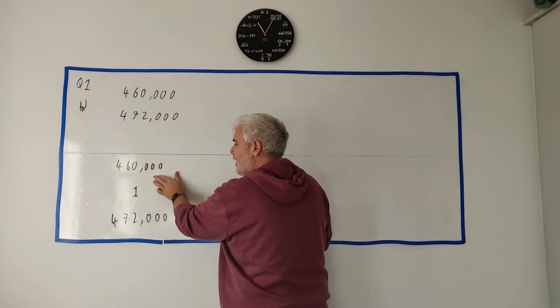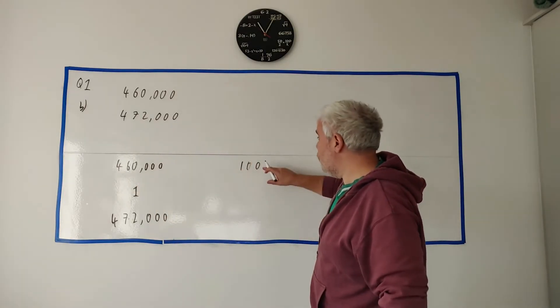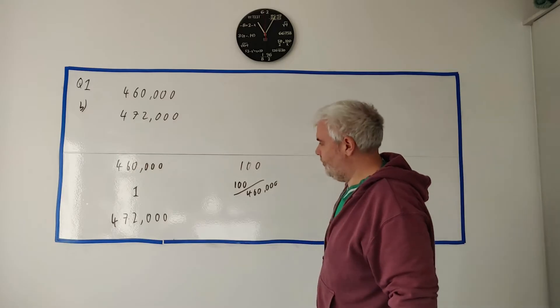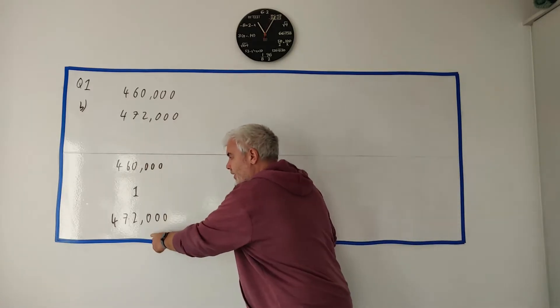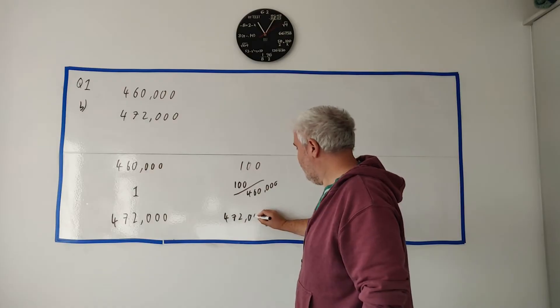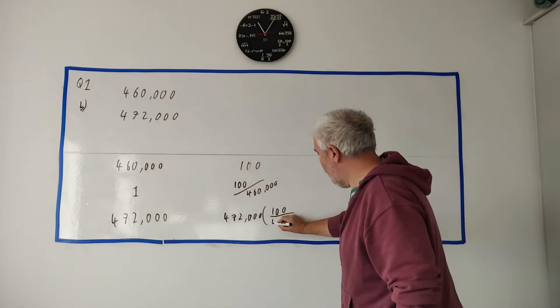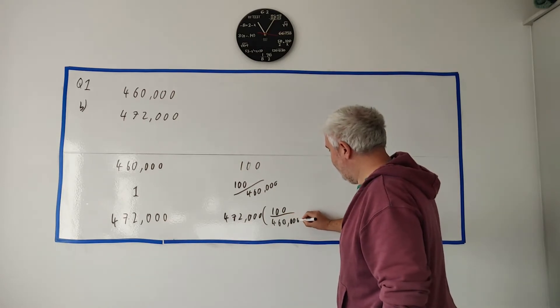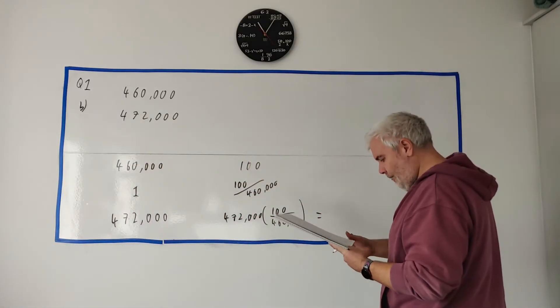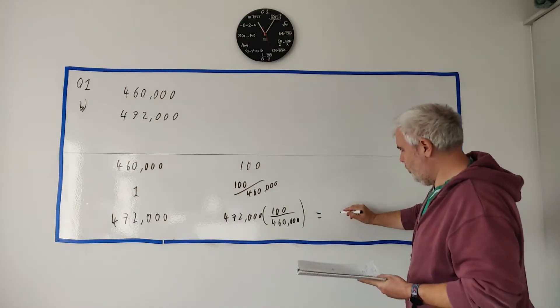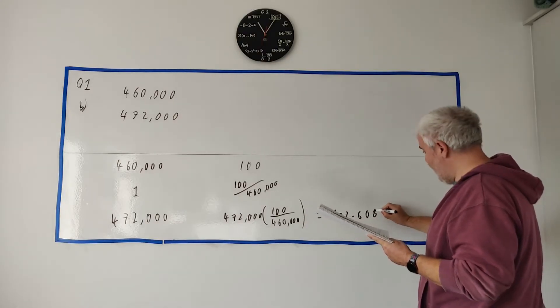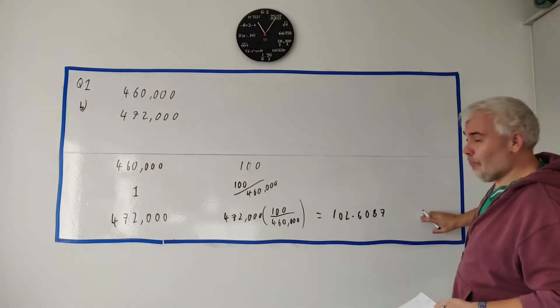How did I get from 460,000 to 1? I divide it by 460,000. So that's 100 divided by 460,000. And then how do I get from 1 to this number? I just multiply by 472,000. So 472,000 multiplied by 100 over 460,000. And a calculator will do that for me. The calculator should give out 102.608 and I think I rounded off to 7 there.